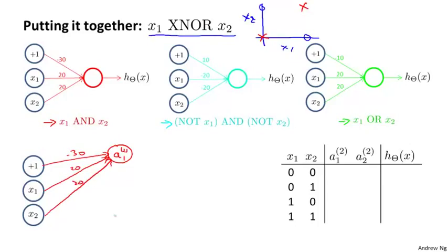Next, let me create a second hidden unit, which I'm going to call a2^(2). That is the second hidden unit of layer 2. And I'm going to copy over the cyan network in the middle. So I have the weights 10, minus 20, minus 20.